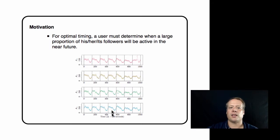One thing to think about is that you want to determine when a large proportion of your followers will be active in the near future. This is showing four weeks' worth of data, and it's showing that the peak times that a lot of people are active varies not only based upon the day of the week, but also from week to week. There are some spikes at times that we need to be able to capture.